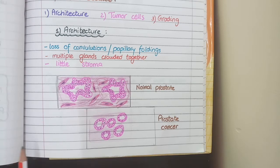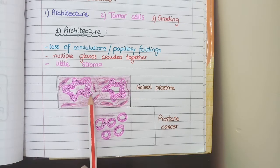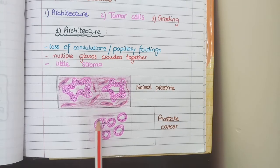Secondly, in normal prostate gland, there is two-layered lining epithelium. But in prostate cancer, there is only a single lining.